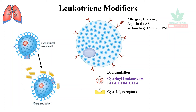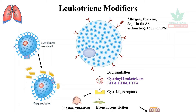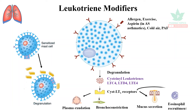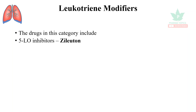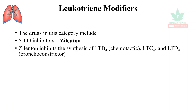These leukotrienes act on the cysteinyl LT1 receptors present in the respiratory tract, causing plasma exudation, bronchoconstriction, and increased mucus secretion. They also increase eosinophil activity in the respiratory tract.